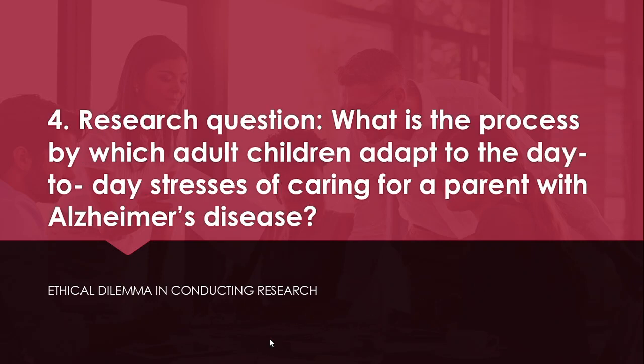For research question number four: What is the process by which adult children adapt to the day-to-day stresses of caring for a parent with Alzheimer's disease? In a qualitative study, which would be appropriate for this question, a researcher may become so closely involved with participants that they become willing to share secrets. Interviews can become confessions, sometimes of unseemly or even illegal behavior. In this example, suppose a woman admitted to physically abusing her mother. How can the researcher report such information to the authorities without undermining a pledge of confidentiality? And if the researcher divulges the information, how can a pledge of confidentiality be given in good faith to other participants?